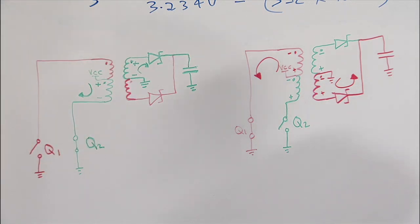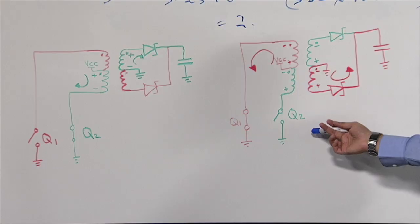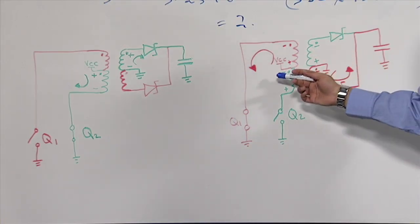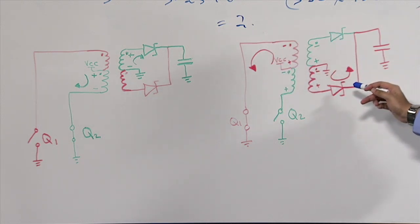So during the other half of the cycle, does this transistor turn on and the first transistor turn off? Exactly. So this means the current is reversed at the input, inducing an equal but opposite voltage at the secondary windings of the transformer.